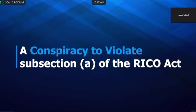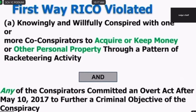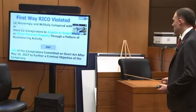Let's talk about subsection A of the RICO Act: knowingly and willfully conspired with two or more co-conspirators to acquire or keep money or other personal property through a pattern of racketeering activity. That's two or more crimes listed within four years. Any of the co-conspirators committed an overt act in furtherance of the criminal objective, and at least one has to be after May 10, 2017. Let's walk through some examples of A.